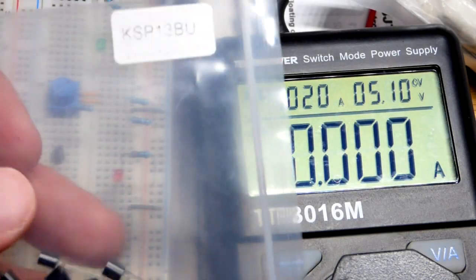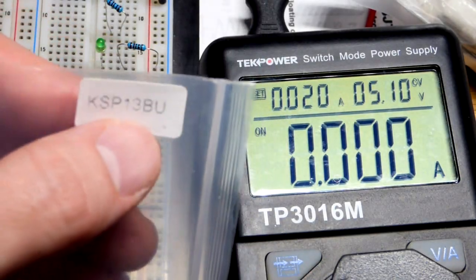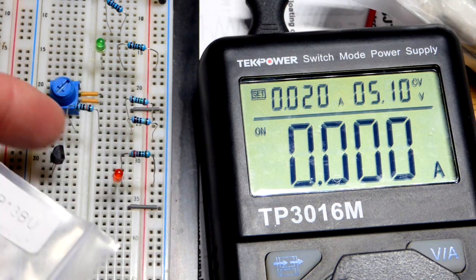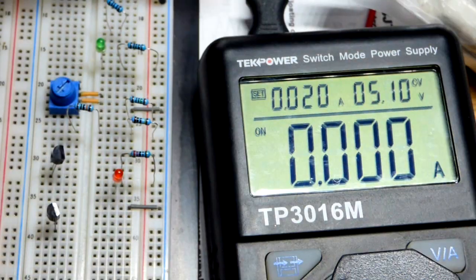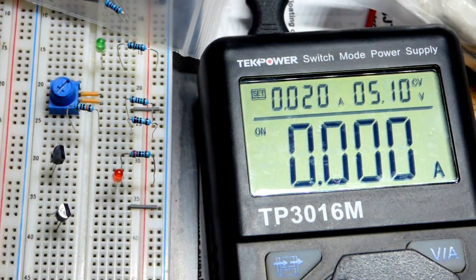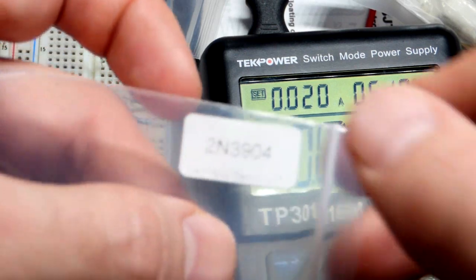So now in this video, we're going to look at the KSP-13 right here. That's a Darlington pair transistor. It looks just like the regular transistor, the 2N3904.